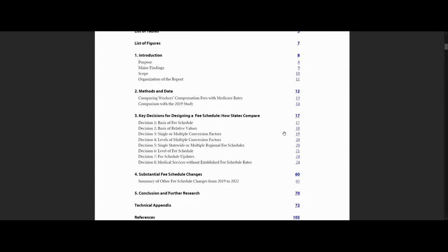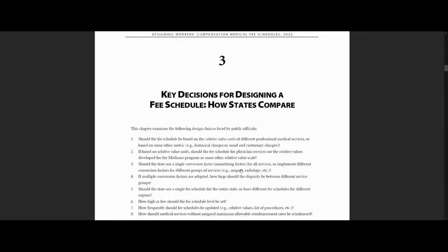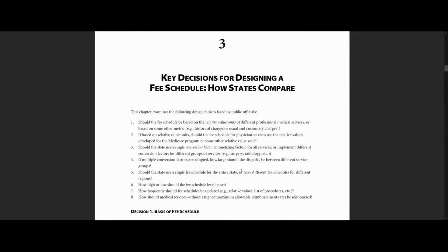Let's start out with key decisions for designing a fee schedule and how states compare. This is going to be one of the most important sections of the report. As you can see, it brings up some of the most important design choices faced by public officials. For instance, should the fee schedule be based on the relative value units of different professional medical services or based on some other metric? Should the state use a single fee schedule for the entire state or have a different fee schedule for different regions? How high or how low should the fee schedule level be set?